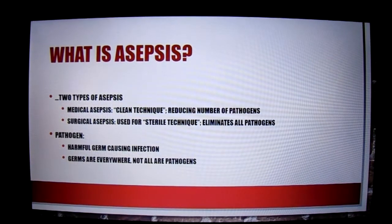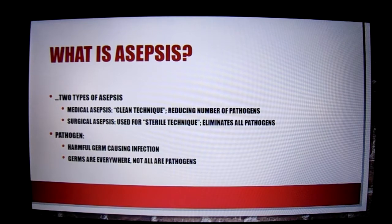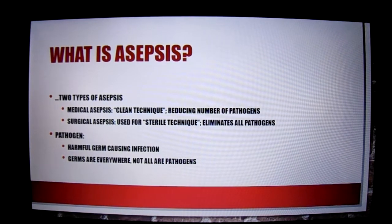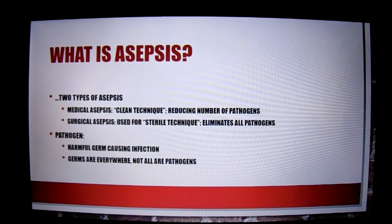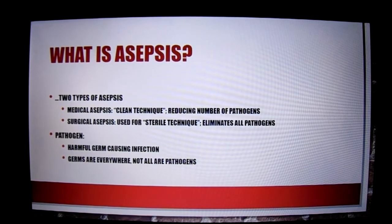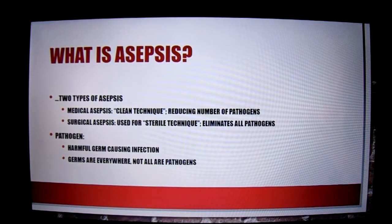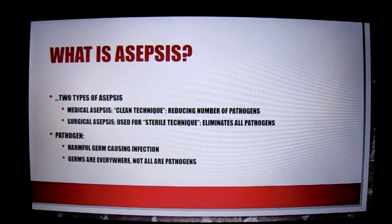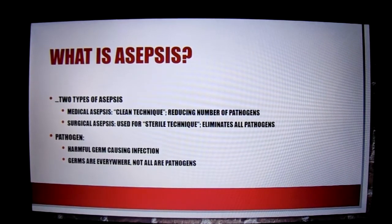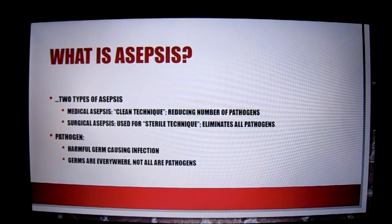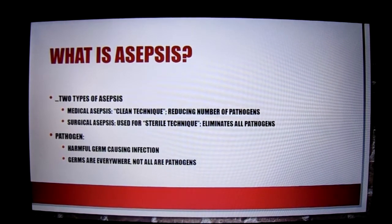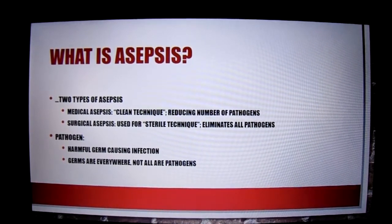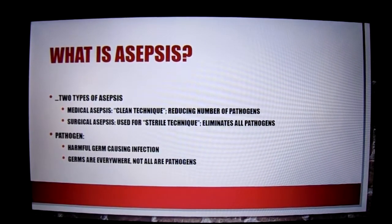So what does asepsis mean? It means decreased or no pathogens or harmful germs present. There are two types of asepsis: medical asepsis or surgical asepsis. Medical asepsis is when there are decreased harmful germs or pathogens present. Surgical asepsis is when there are no harmful germs present. These harmful germs and/or pathogens are the start of any infection.